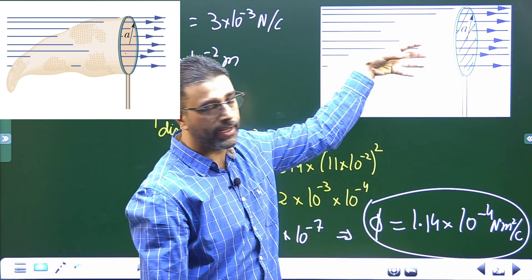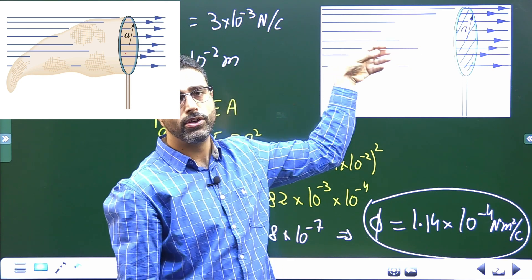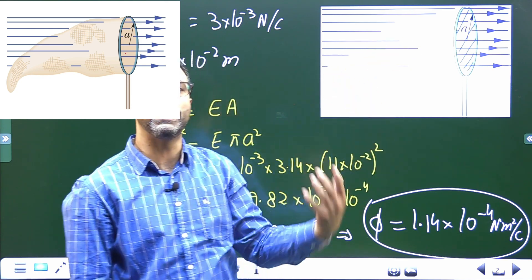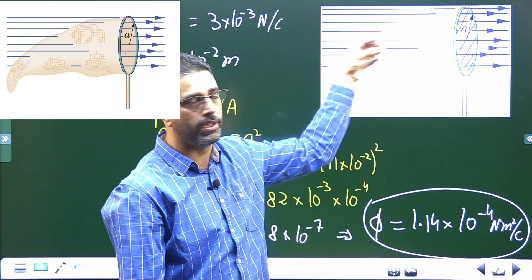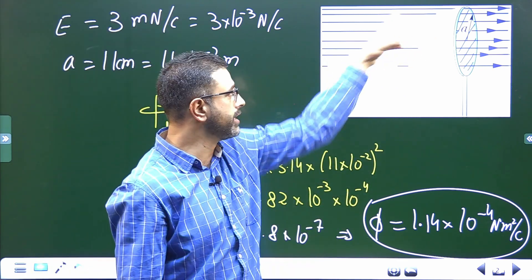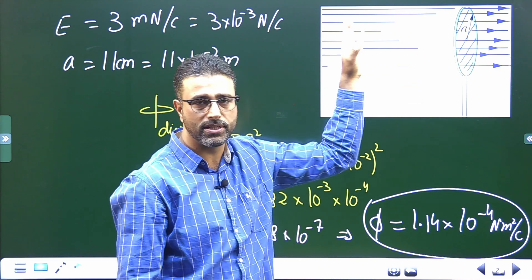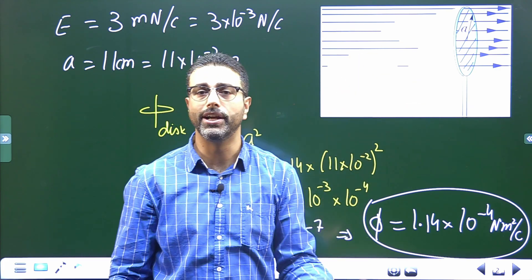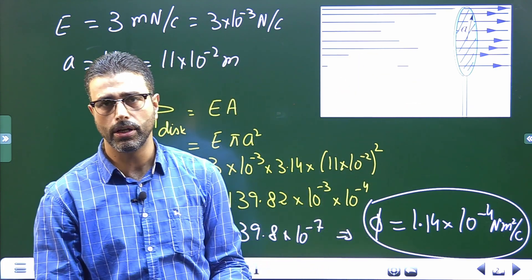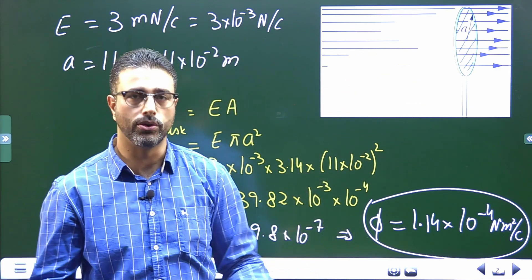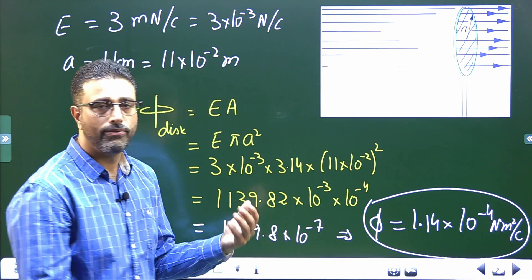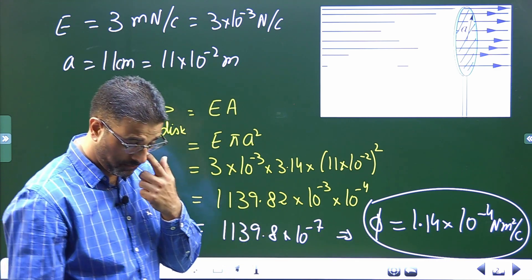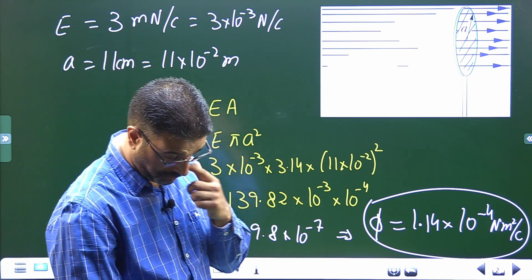Same will be the flux through the netting. This is the indirect way of finding flux through the netting — this crazy-looking surface which we can't find directly because we can't solve the integral. Okay, thank you.